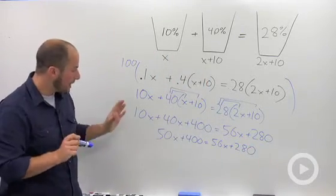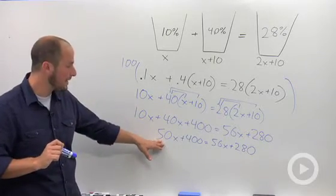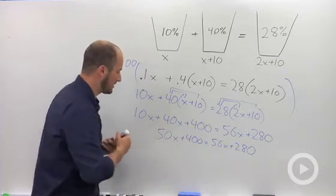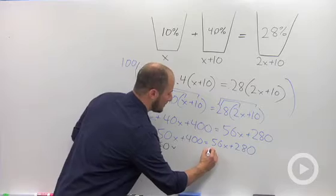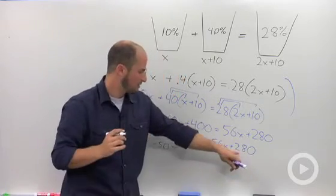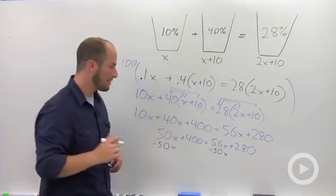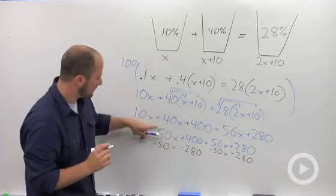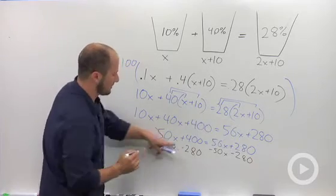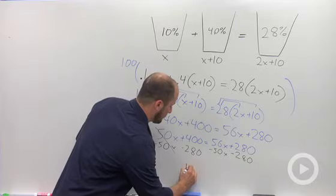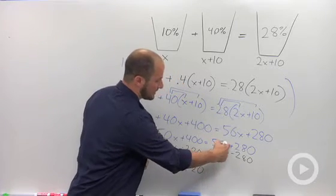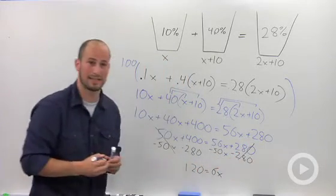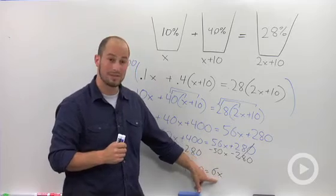Okay. So now we have x's and other terms. Combining all our x's. I try to keep my x's positive. So I would subtract this 50x over to the other side. Get our 280 over the other side as well. So subtract 280 and then simplify. So we got rid of this 50x. 400 minus 280 is 120. 56x minus 50x is 6x and that 280 disappears. So we're left with 120 is equal to 6x.